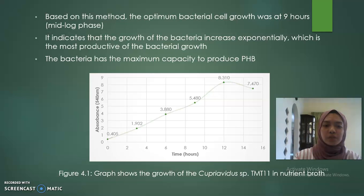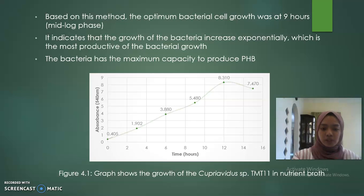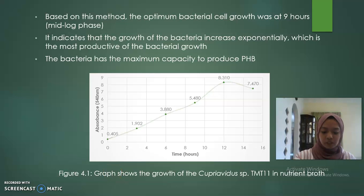This indicates that the growth of the bacteria increased exponentially, which is the most productive phase of bacterial growth. The bacteria have the maximum capacity to produce PHA at this point. Figure 4.1 graph shows the growth of Cupriavidus sp. MT11 in nutrient broth. At the point of 9 hours, it indicates the optimum bacterial cell growth at the mid-log phase.